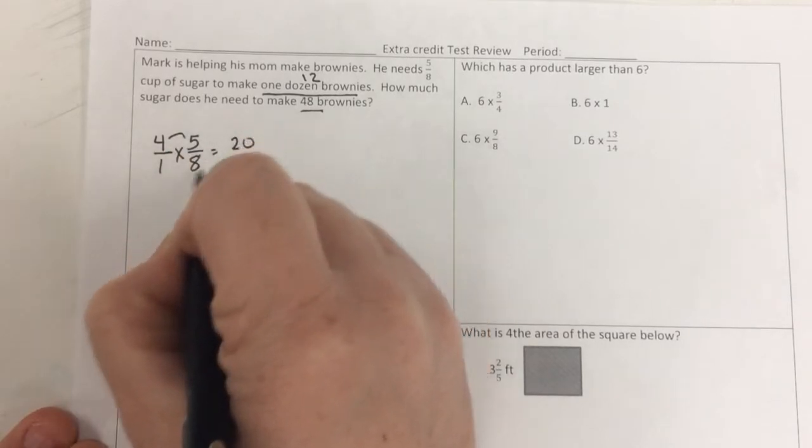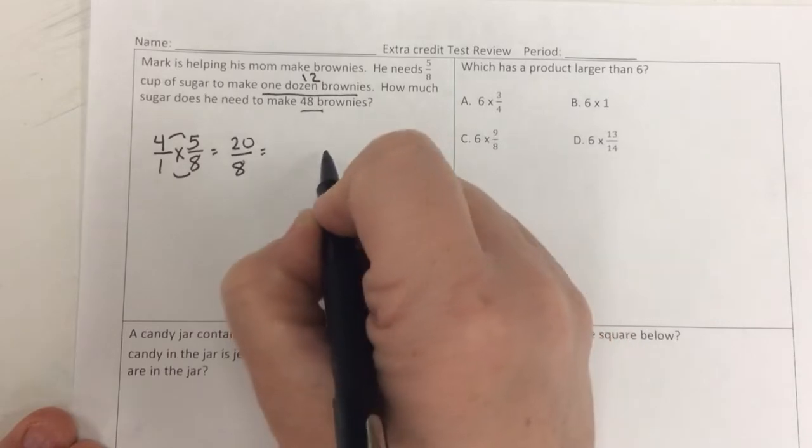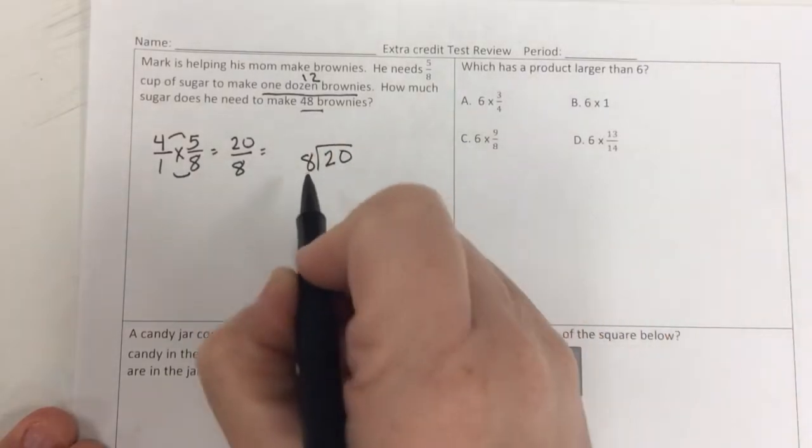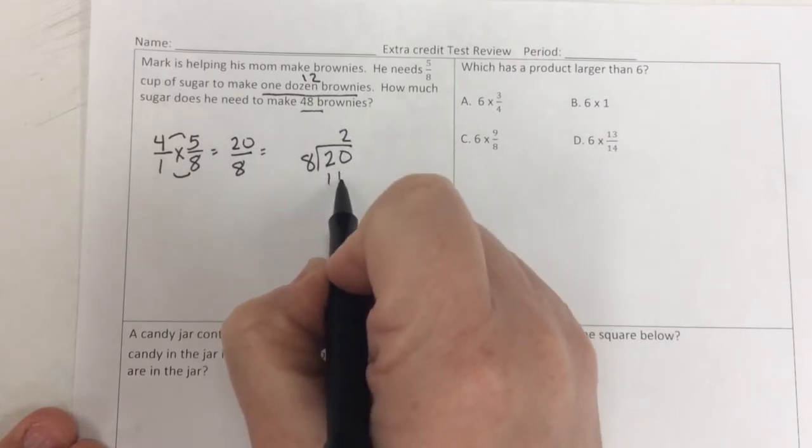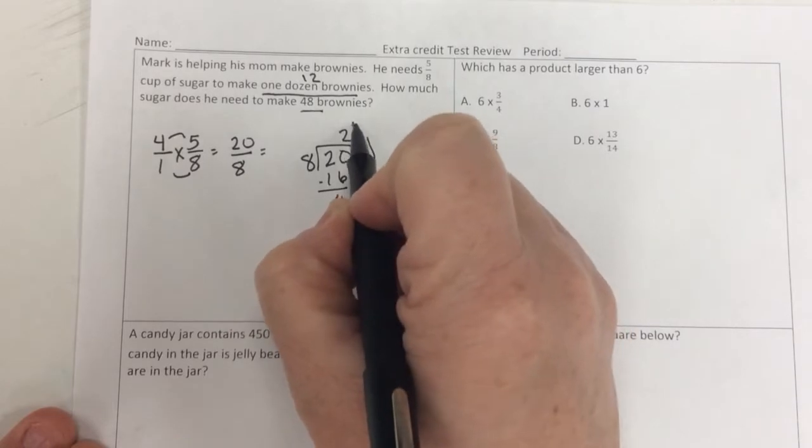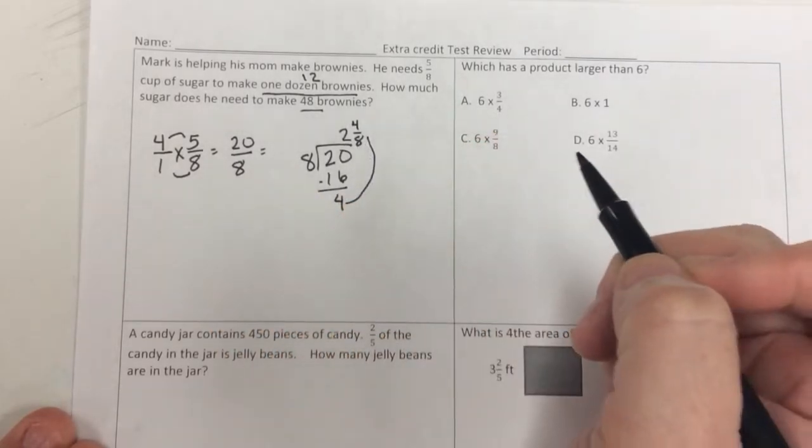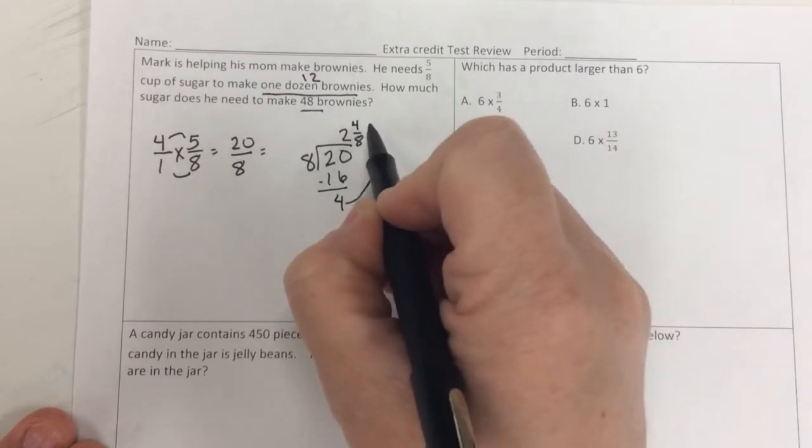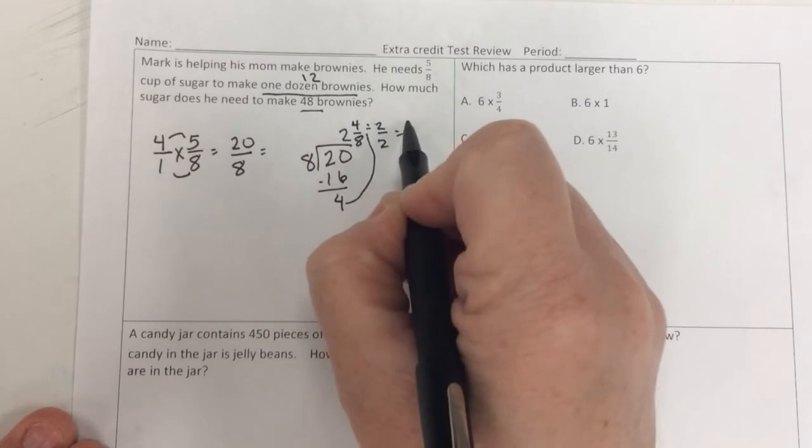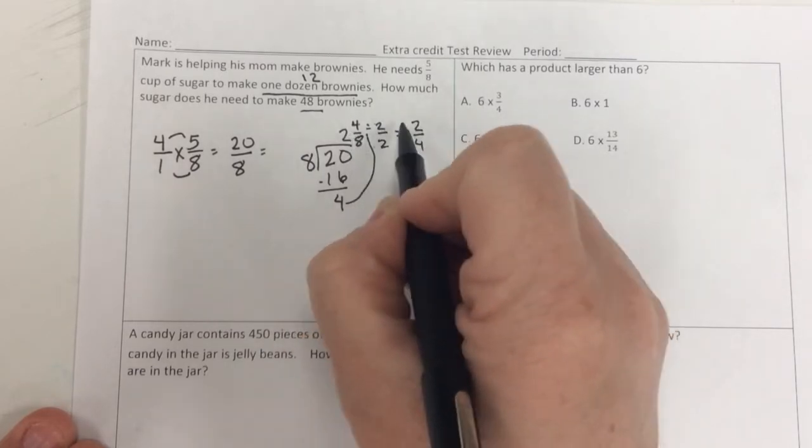So 4 times 5/8. 4 times 5 is 20. 8 times 1 is 8. 20/8. So I use division. 20 divided by 8. 8 times 2 is 16. And I subtract and get a 4. But that 4 becomes my numerator and my denominator is 8.